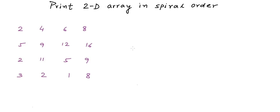We do not actually need to delete elements from the array to achieve this. Instead, we mark the boundaries of the untraversed array using four variables: T for the topmost row, B for the bottommost row, L for the leftmost column, and R for the rightmost column of the untraversed sub-array.